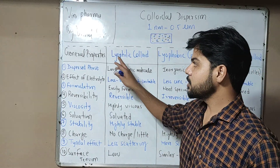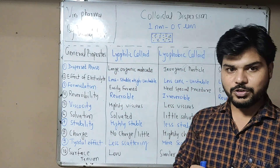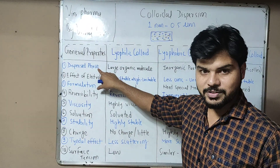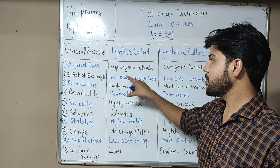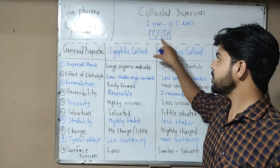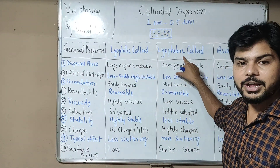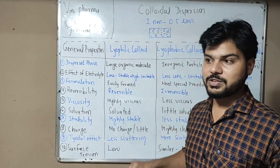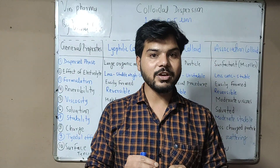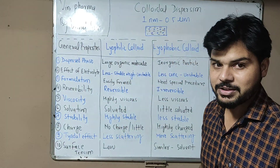Now we will talk about their general properties — how can we generally characterize lyophilic, lyophobic, and association colloids? Talking about the dispersed phase: lyophilic colloids contain large organic molecules in the colloidal size range. Lyophobic colloids contain inorganic molecules such as silver and gold. Association colloids have surfactants as the dispersed substance, present in micellar form above the critical micelle concentration.